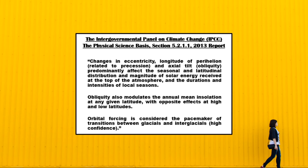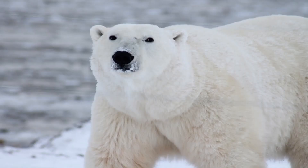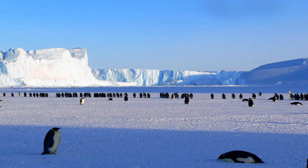So thanks to the Milankovic cycles, and of course all the other factors, we now live in a time of glaciers, with an ice sheet on Greenland and an ice sheet on Antarctica.